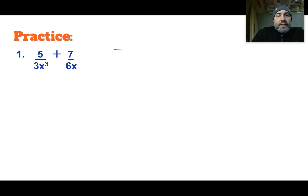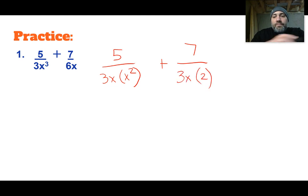I'm going to rewrite it as 5 over, I'm going to pull a 3x out of this one. And I'm going to write that as an x² there. That would be equivalent to the first part. And then I'm going to put my plus, and then I'm going to put 7 and I'm going to pull out my 3x and I would have a 2 still. So I just kind of rewrote those with the greatest common factor.